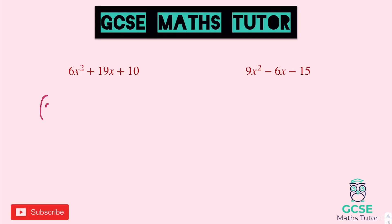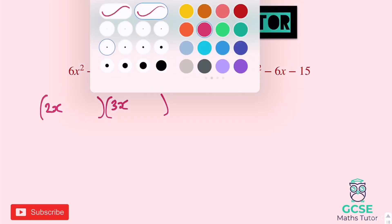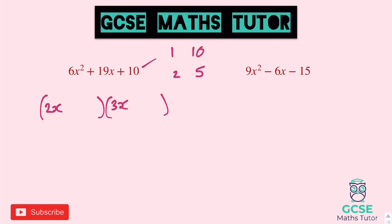For the first one with 6x squared, we'll go for 2x and 3x. Factors of 10: 1 and 10, or 2 and 5. One's going to double, one's going to triple. For 1 and 10: double 1 is 2, triple 10 is 30 — won't work. Triple 1 is 3, double 10 is 20 — we can make 17 or 23 but not 19. So it must be 2 and 5. Double 2 is 4, triple 5 is 15 — or triple 2 is 6, double 5 is 10. To make 19 we need 4 and 15. Both are positive, so we want the 2 to double and the 5 to triple: 2 goes in the opposite bracket to the 2x, and 5 goes in the opposite bracket to the 3x.